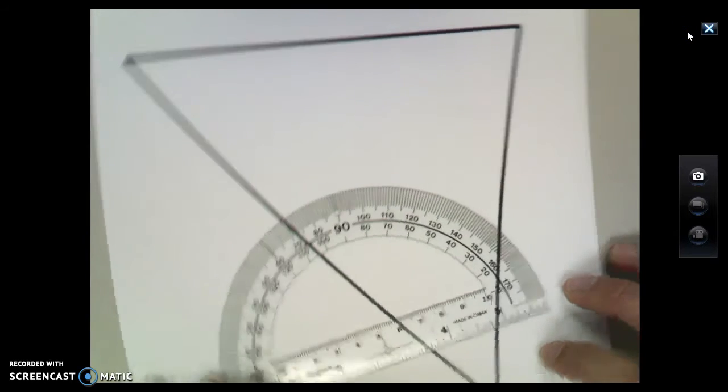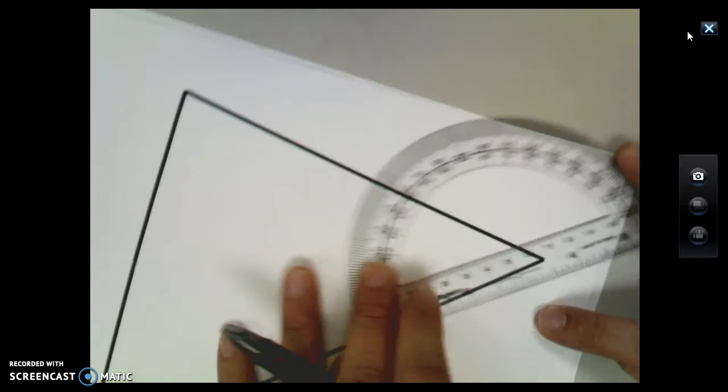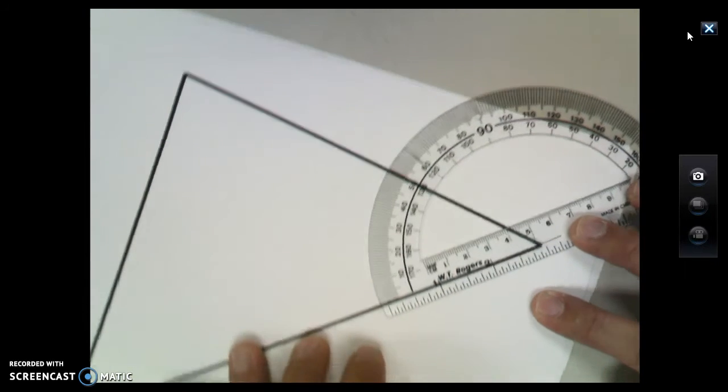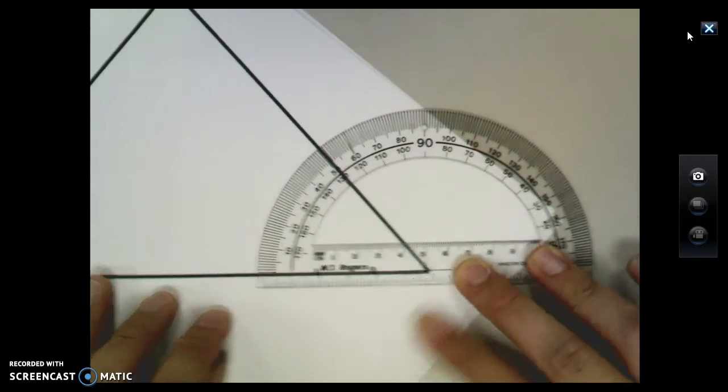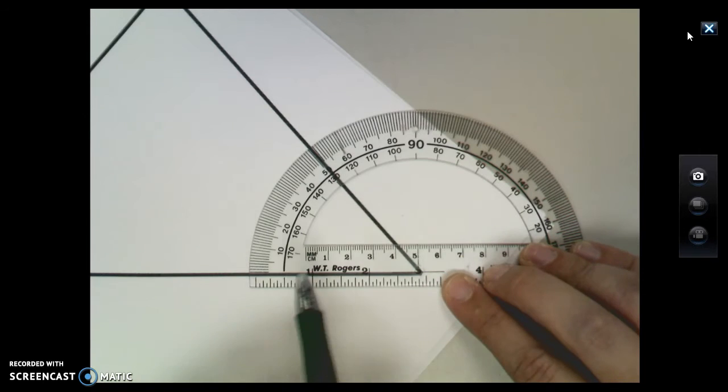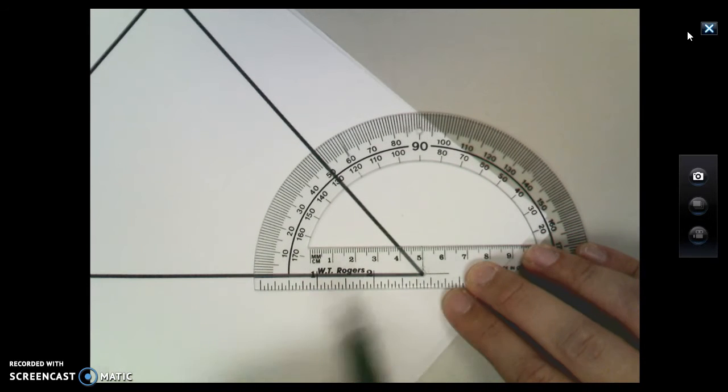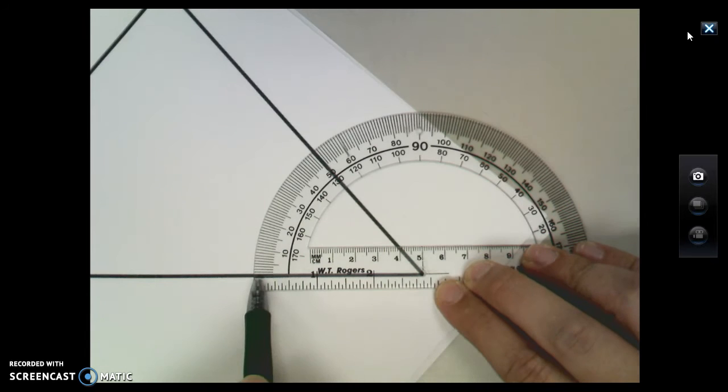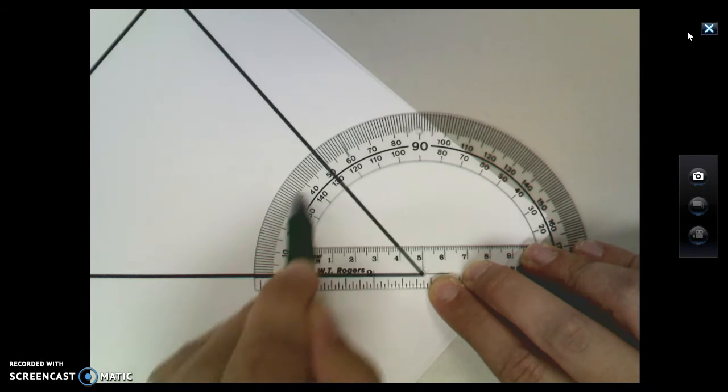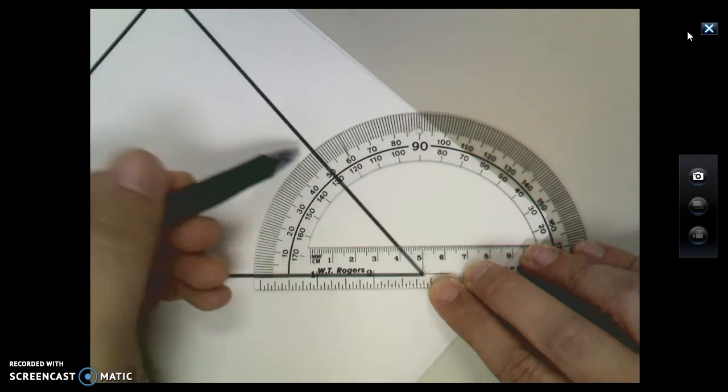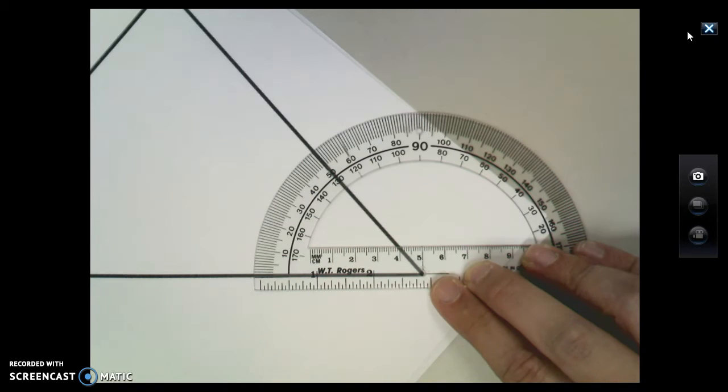So if I take my protractor out here, remember that you always want to read from one ray to the other. I have the vertex of the triangle marked right there at the center. I have my angle zero starting right there, which means I'm going to read from zero up. So I'm going to use the outside set of numbers. As you can see, this ends up being a 50 degree angle.